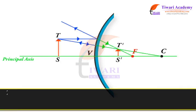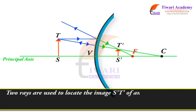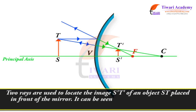Two rays are used to locate the image S1 T1 of an object S T placed in front of the mirror. It can be seen that the image is virtual, upright, and diminished.